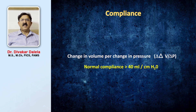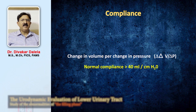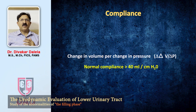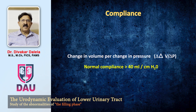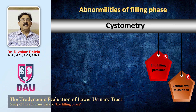The compliance, as I said, you can suspect poor compliance by just observing the consistent elevation in the pressure line. But you can also calculate this by change in the bladder volume divided by change in the pressure. The normal compliance should be 40 ml per centimeter of water.